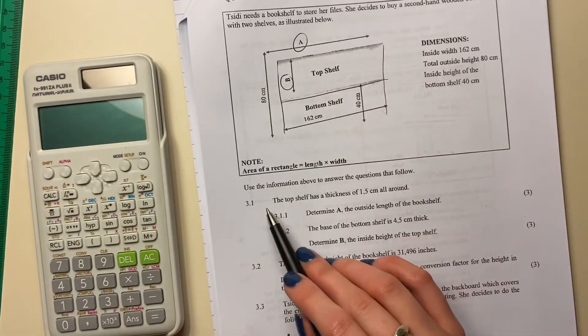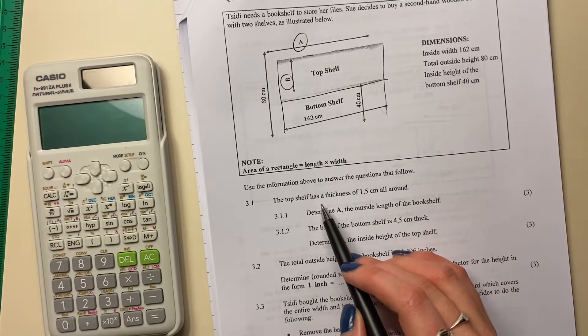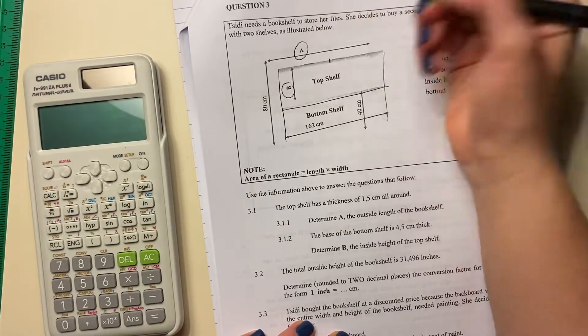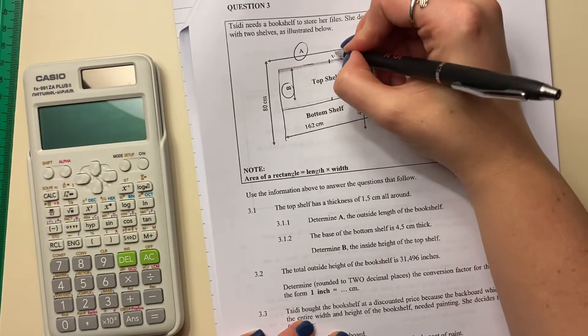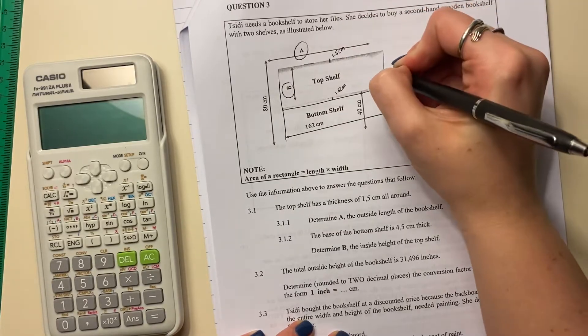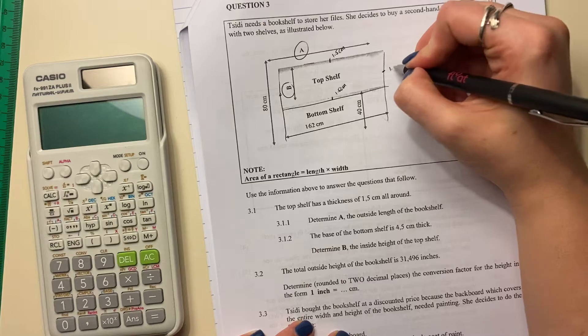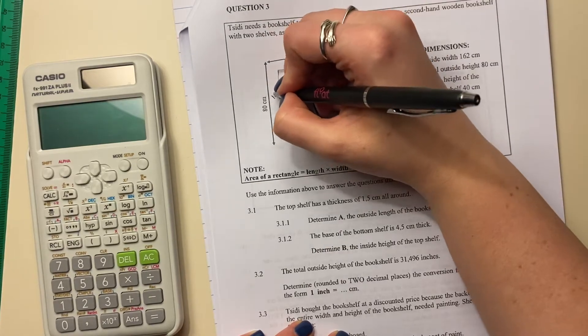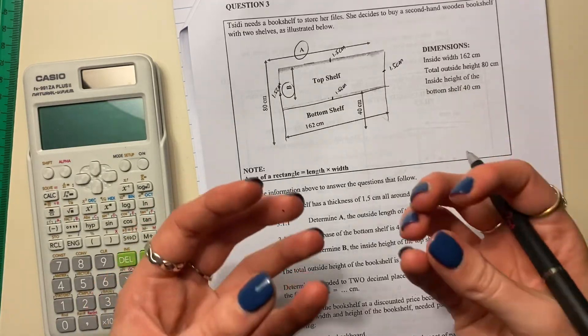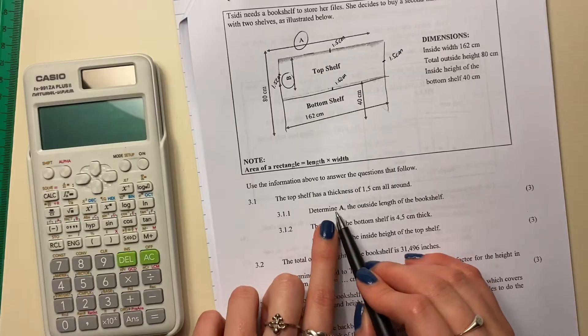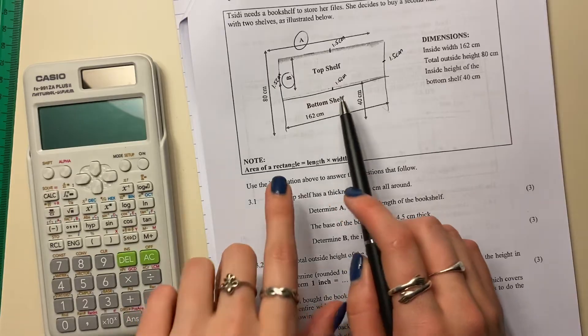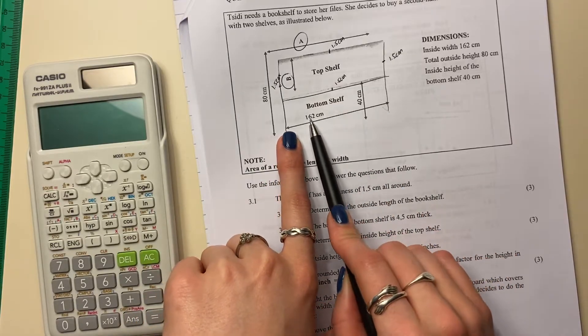So 3.1, the top shelf has a thickness of 1.5 centimeters all round. So what that means is it's saying that little bit there, which is looking very bad on my printer, is 1.5 centimeters and that little bit there is 1.5 centimeters. So it's basically got the thickness of wood. Then it says, determine A, the outside length of the bookshelf. So the outside length, we know that the inside length is 162.